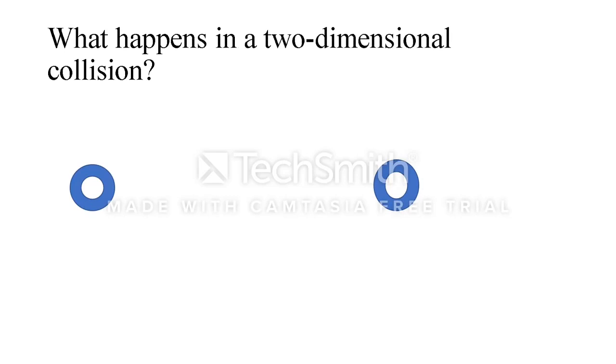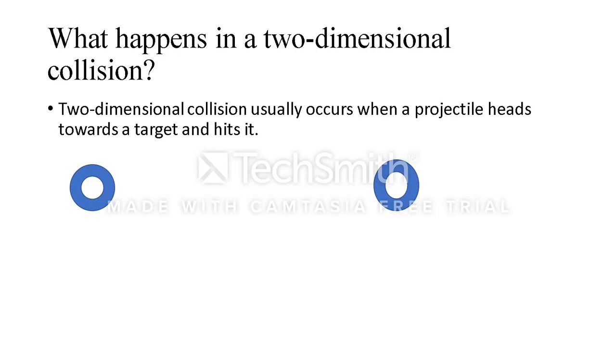Now another question you guys may have is, what happens in a two-dimensional collision? Well, in a two-dimensional collision, it usually occurs when a projectile heads towards a target and hits it. Now this projectile has a velocity of greater than zero, and the other object has a velocity of zero. So if we write this down, we get V1 is non-zero, and V2 is zero.